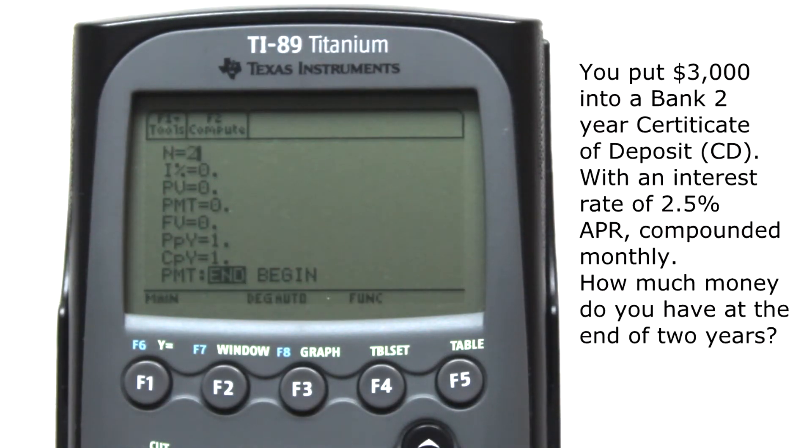N, Total Number of Periods, that will be 2 years times 12 compounding periods per year equals 24. Just enter 2 times 12 and move to the next variable below and the calculator will automatically calculate the 24. I% is the interest rate. Enter 2.5. Do not convert this into a decimal.